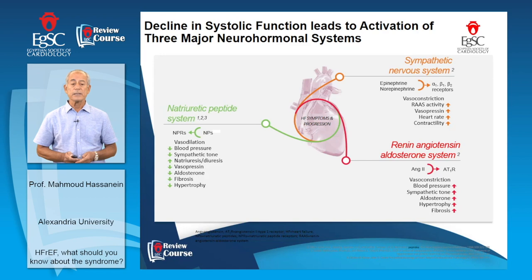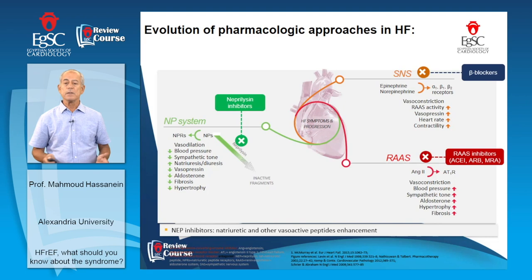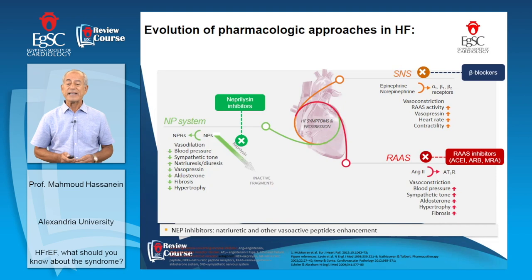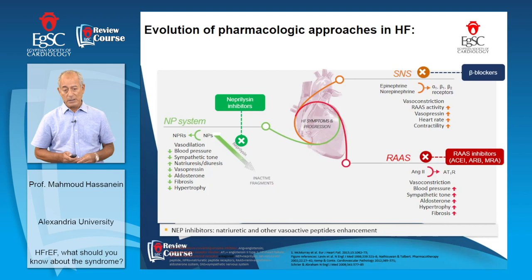In the treatment of heart failure, we use beta blockers to counteract activation of the sympathetic nervous system. We use RAS inhibitors — such as ACE inhibitors, angiotensin receptor blockers, and mineralocorticoid receptor antagonists — to antagonize the effects of intense RAS activation. We use neprilysin inhibitors to enhance the natriuretic peptide system. As you will learn, in the treatment of heart failure, neprilysin inhibitors are combined with angiotensin receptor blockers in the molecule sacubitril/valsartan.